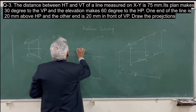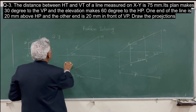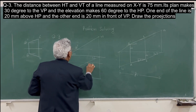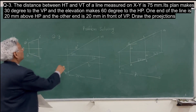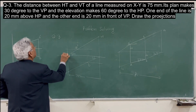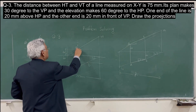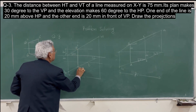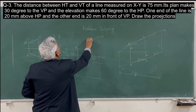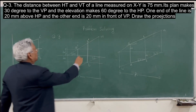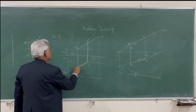So at 20 mm, A dash is here, and at 20 mm in front of the vertical plane, you get point B. Once you get A and B dash, A will lie on this line and B dash will be on this line. That is the projection of line AB satisfying the given conditions.